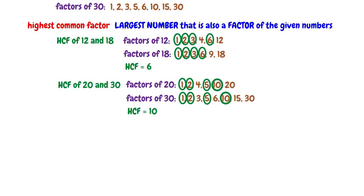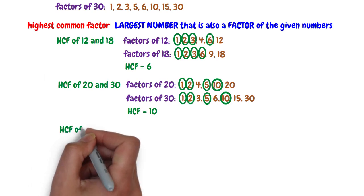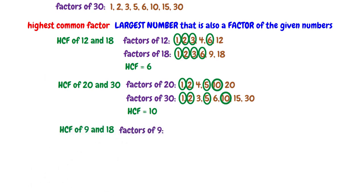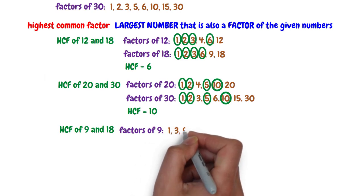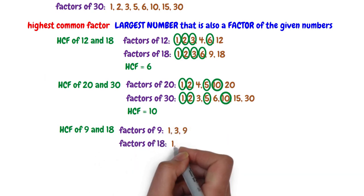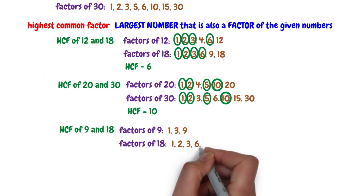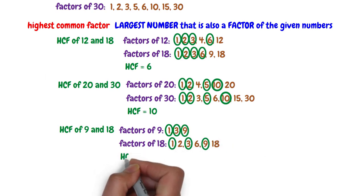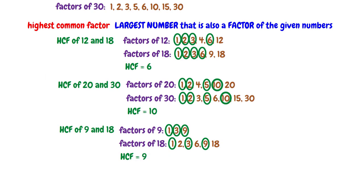The last example: let's find the highest common factor of 9 and 18. The factors of 9 are 1, 3, and 9, and the factors of 18 are 1, 2, 3, 6, 9, and 18. The common factors are 1, 3, and 9, and the largest factor is 9. So, the highest common factor of 9 and 18 is 9.